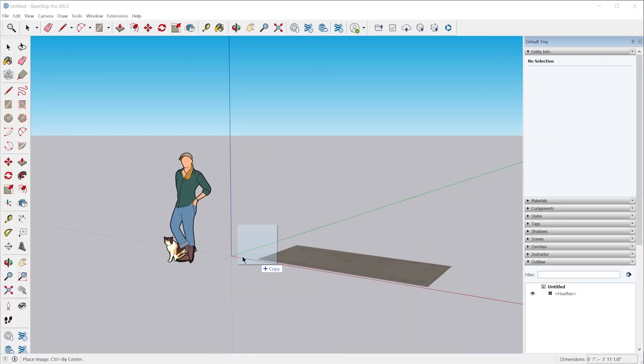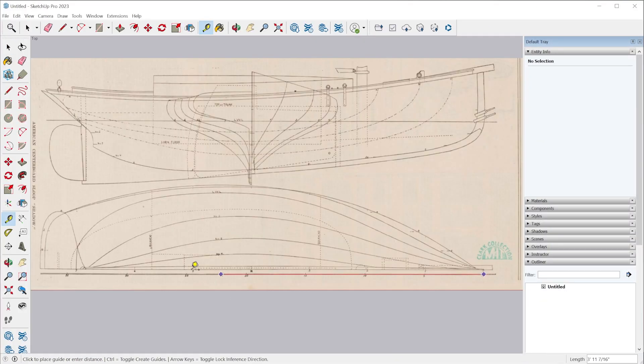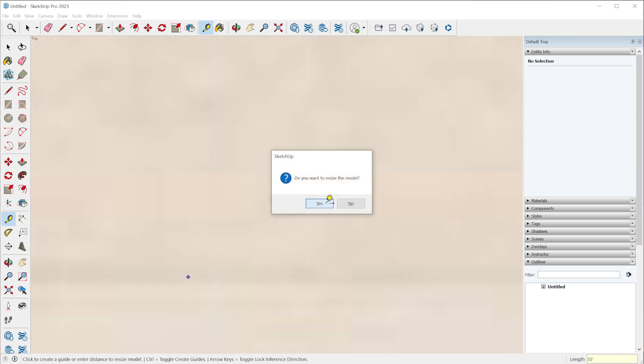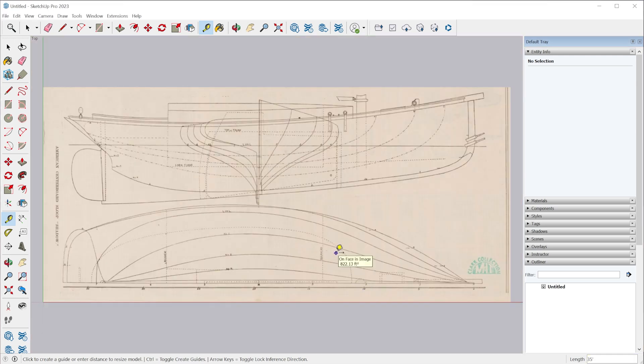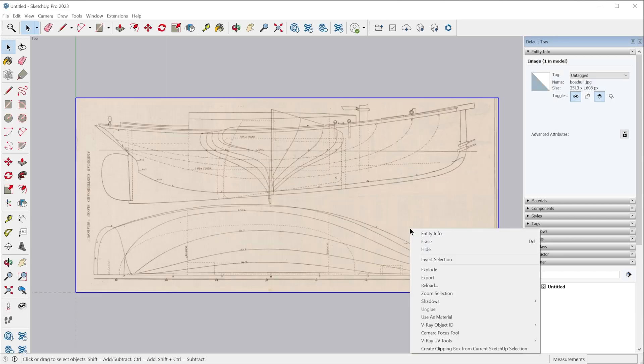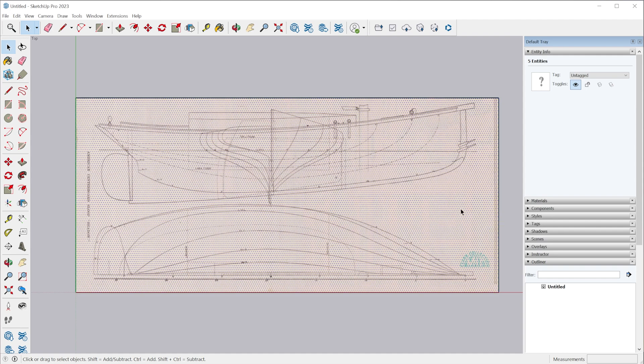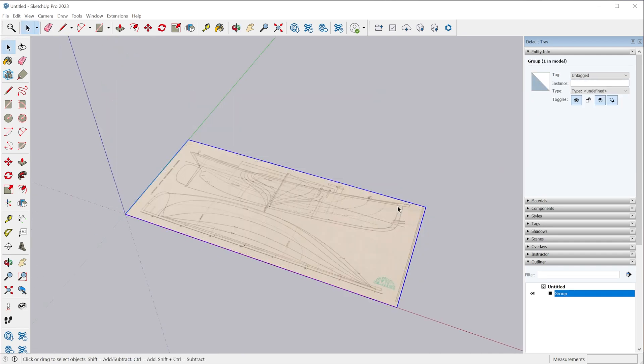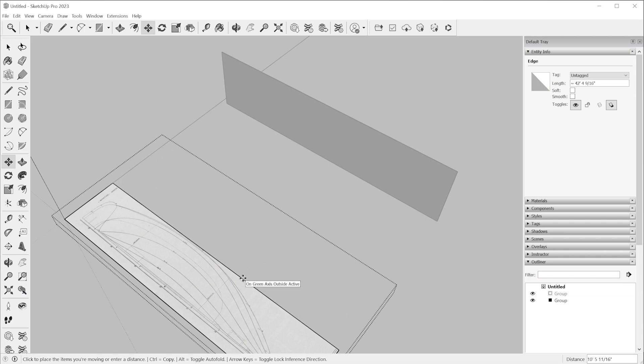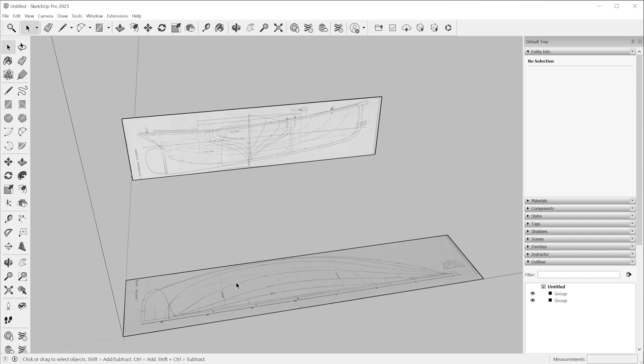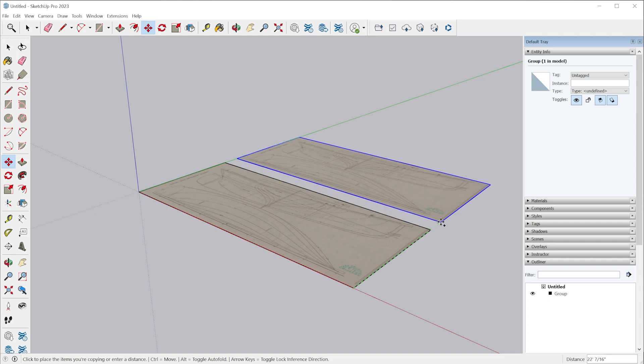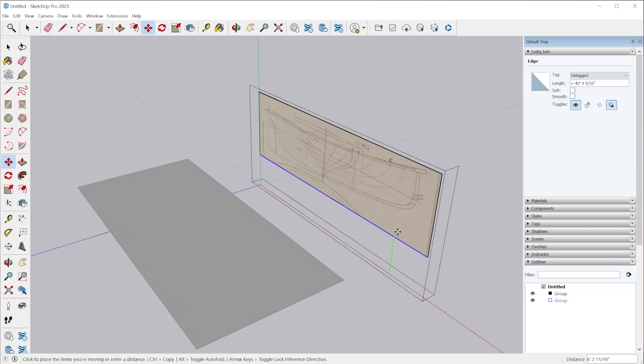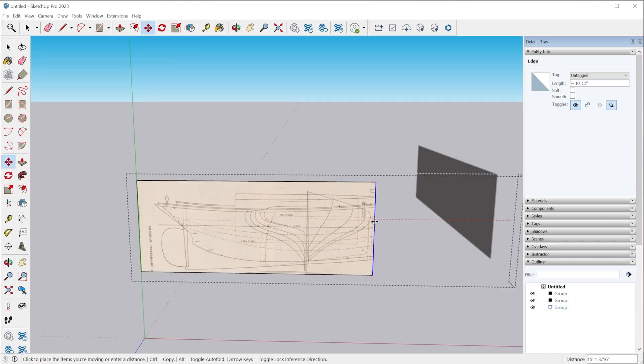I'm just going to drag the image right into SketchUp. I'll scale the image to full size using the tape measure tool. Then I want to orient copies of the top, side, and front views. First I'll explode the image so it gets converted into a material applied to a face and group it to isolate the entities. This is going to let me crop the face down so I can basically isolate each view I want. Then I'll just make copies of the face, rotate them into position, and crop them down.